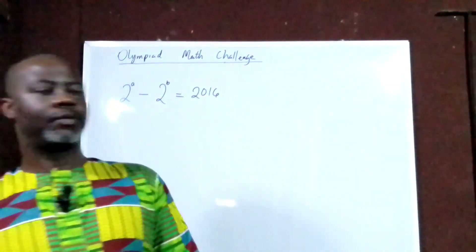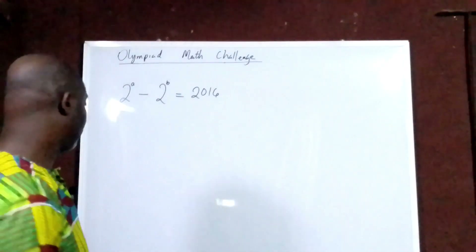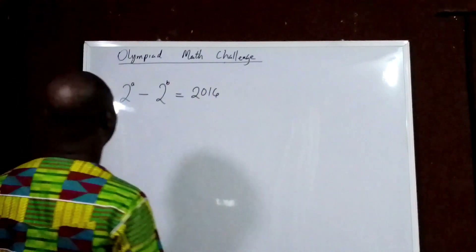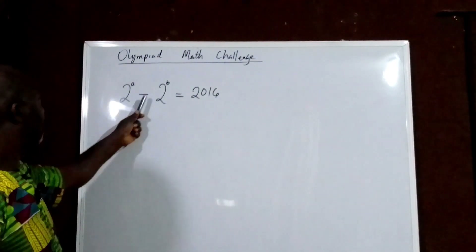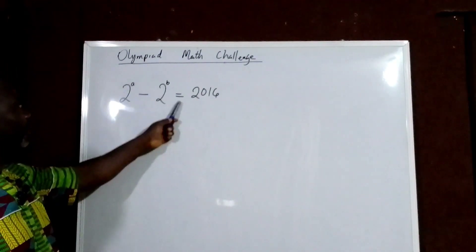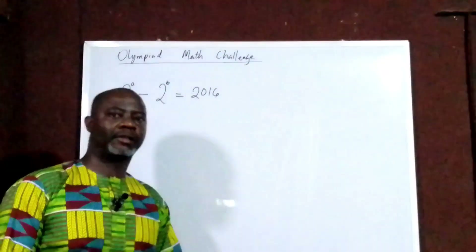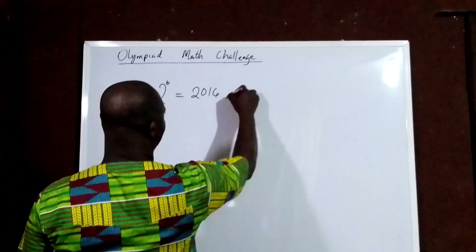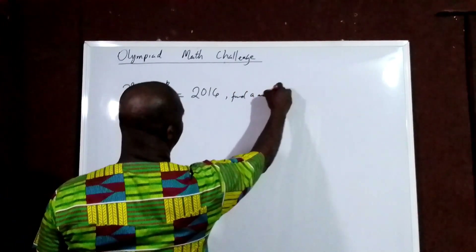Welcome back to my YouTube channel. Today we have an Olympiad math challenge on the board. Let's look at the question: 2 to the power of A minus 2 to the power of B equals 2016. We have to find A and B.